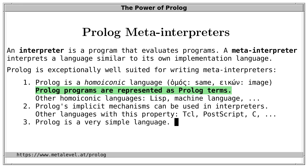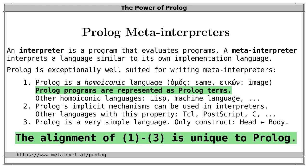Third, Prolog is a very simple language. If you think about it, Prolog has only a single language construct: 'head holds if body holds.' This is already quite unique to Prolog. Most, if not all, programming languages are conceptually much more complex. I claim the specific alignment of these points is unique to Prolog — only in Prolog are these features aligned such that we can write exceptionally short meta-interpreters.